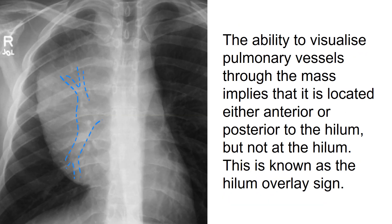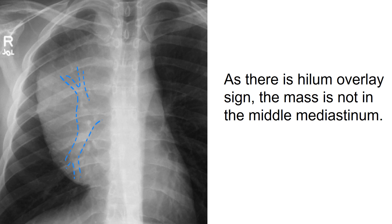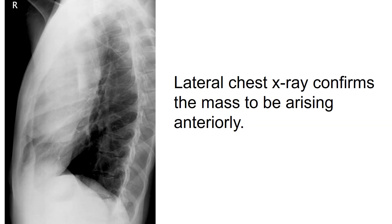The ability to visualize pulmonary vessels through the mass implies that it is located either anterior or posterior to the hilum, but not at the hilum. This is known as the hilum overlay sign. As there is a hilum overlay sign, the mass is not in the middle mediastinum. Lateral chest X-ray confirms the mass to be arising anteriorly.